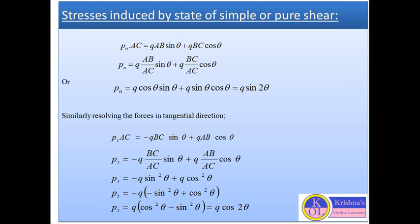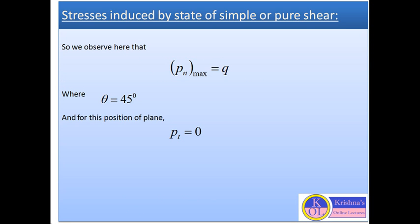Observing these equations, we can calculate the maximum normal stress when θ = 45°. Substituting θ = 45° into the normal stress equation, we get the maximum normal stress equal to Q. For this position of the plane, Pt = 0. So at θ = 45°, Pn_max = Q and Pt = 0.